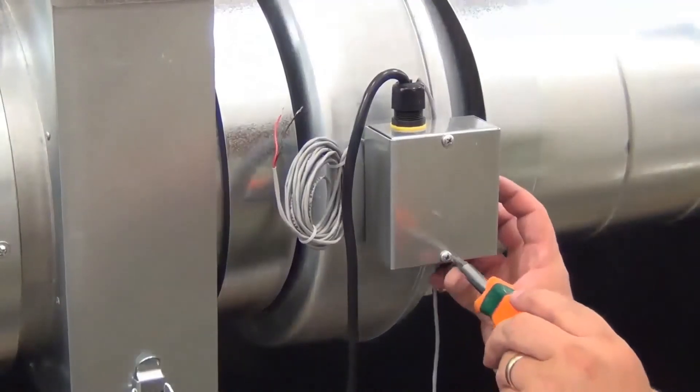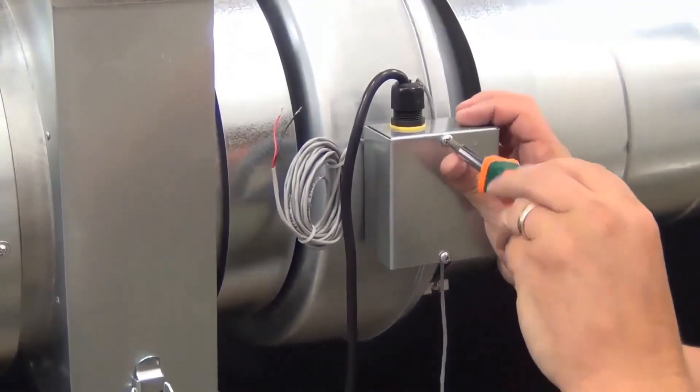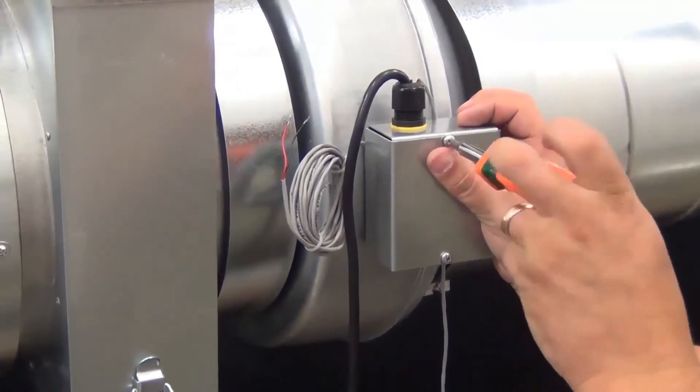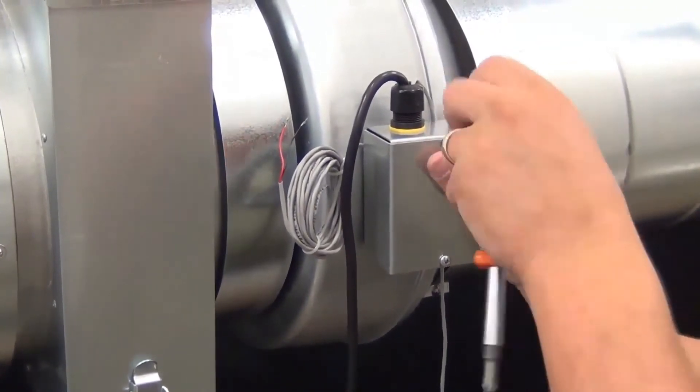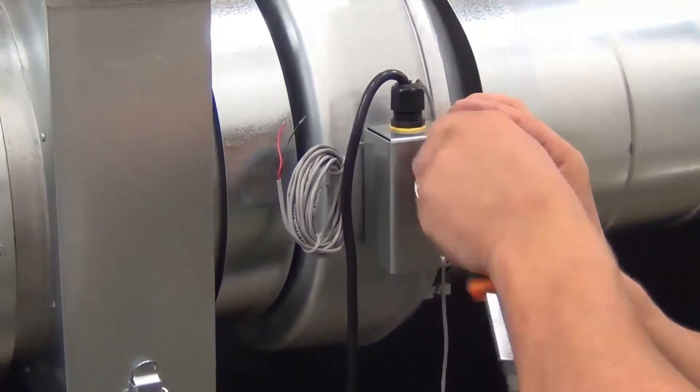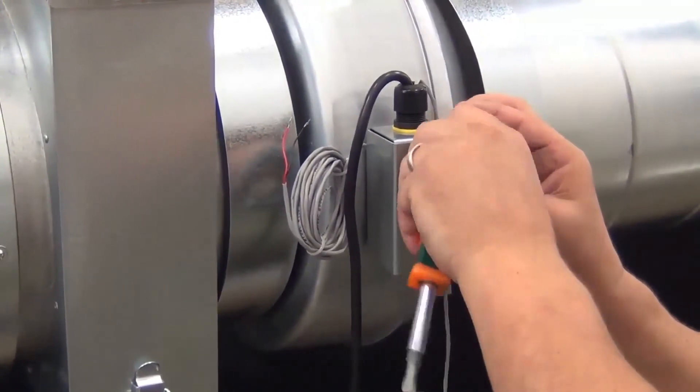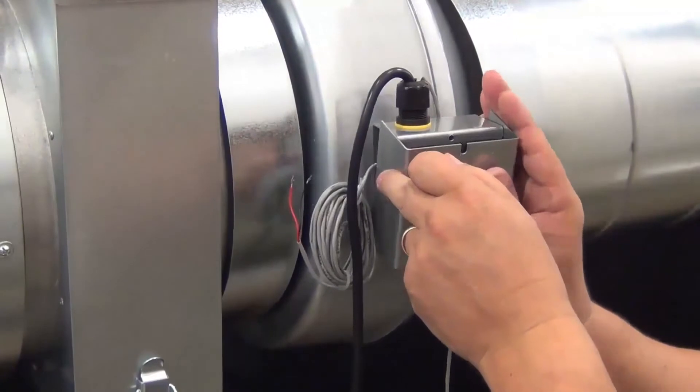This fan has been wired for 120 volts per the instructions in the fan installation manual. Take off the wiring box cover to access and remove the installed potentiometer.